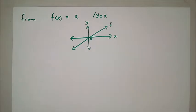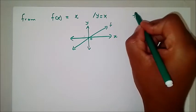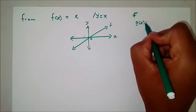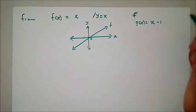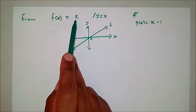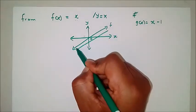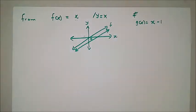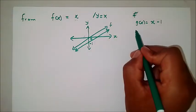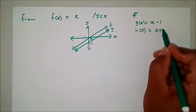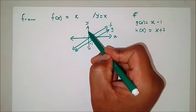Now we have f(x) = x. If g(x) = x - 1, how was the graph transformed from f(x) = x? This graph was shifted one unit downward — because of the negative 1.